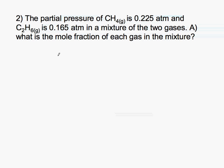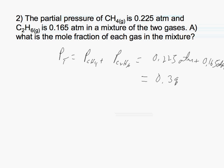The first thing we need to do is find the total pressure. So PT equals the pressure of CH4 plus the pressure of C2H6, which is 0.225 atmospheres plus 0.165 atmospheres. This gives us a total pressure of 0.39 atmospheres.